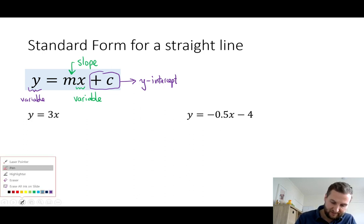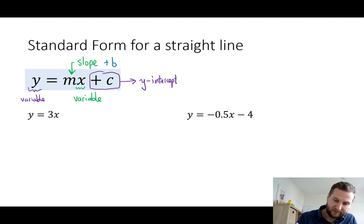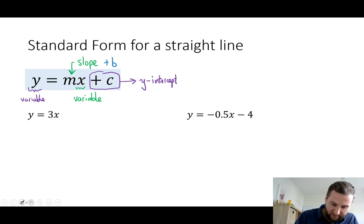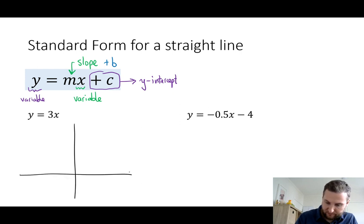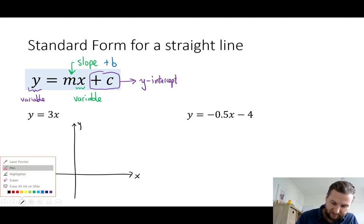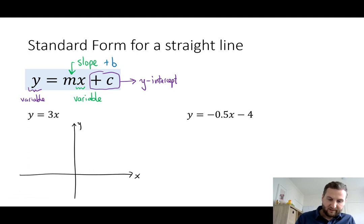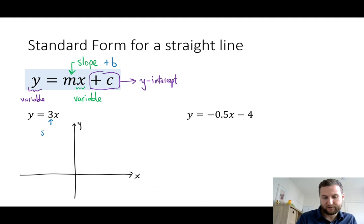Sometimes you may have seen it as plus b down the end, just depending on where you learned it from. So let's have a look at two examples. So y equals 3x — the 3 straight away in front here tells me the slope, and that means the rise over run is plus 3, so it rises 3 every time it goes over by one point.